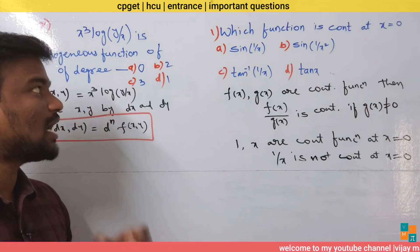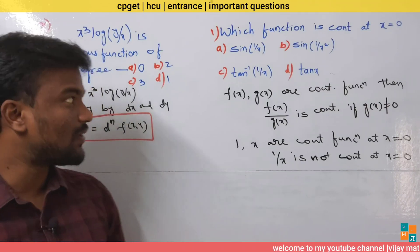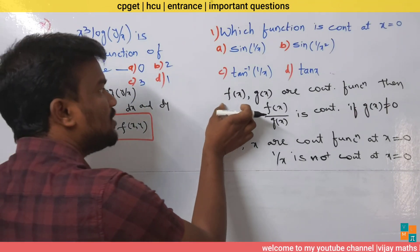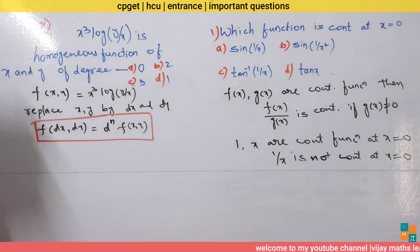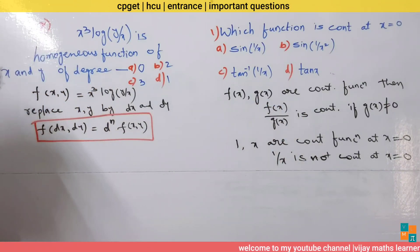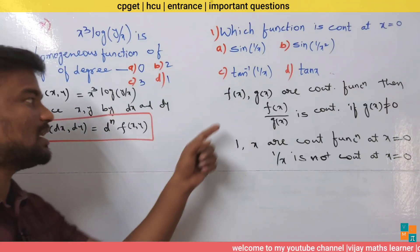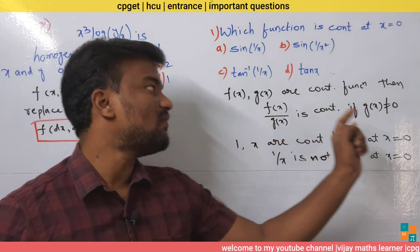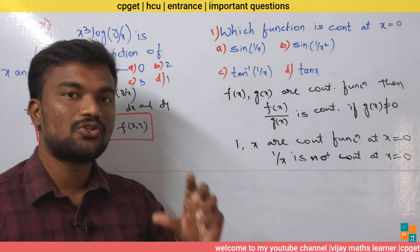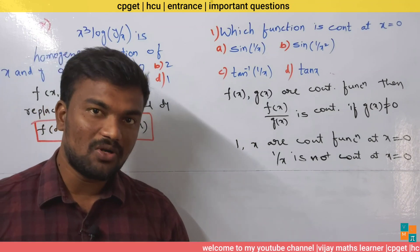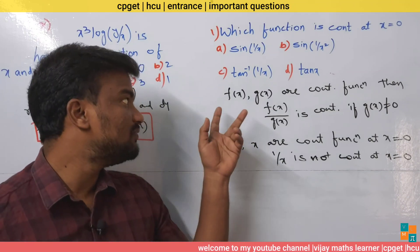We have to find which of these four functions is continuous at x equals 0. Consider that if f(x) and g(x) are continuous functions, then the quotient of continuous functions is also continuous, provided the denominator is not equal to 0.